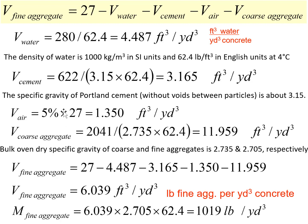In the previous step we know that we need 5% air content. So per cubic yard of concrete we have 27 cubic foot of concrete, and the volume of air will be 5% times 27, which is 1.35 cubic foot per cubic yard.